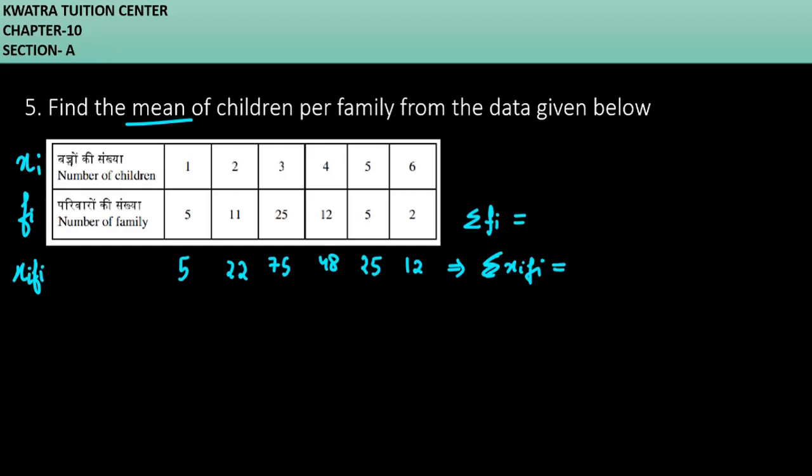Adding all these you will get xi and fi as it is coming out to be 187. And adding all the frequencies up you are getting it as 60. So divide both of them. So 187 divided by 60 will give you 3.1 as the mean. This is your answer for question number 5.